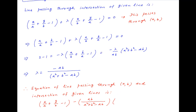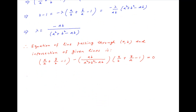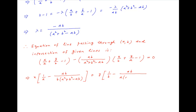multiplied by x upon b plus y upon a minus 1 is equal to 0. Collecting the coefficients of x and y respectively, we get x times 1 upon a minus ab divided by b times a squared plus b squared minus ab, plus y times 1 upon b minus ab divided by a times a squared plus b squared minus ab, minus 1 plus ab divided by a squared plus b squared minus ab, is equal to 0.